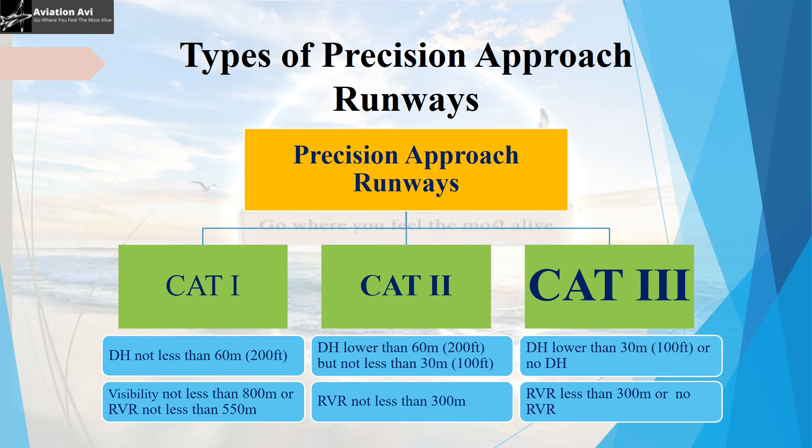In a CAT-3 precision approach runway, the decision height is lower than 30 meters or there is no decision height at all, meaning the aircraft is guided to the centerline of the runway with great precision. The RVR is lower than 300 meters or there is no RVR requirement at all. That means even when the runway is not visible at all, landings can be carried out precisely with the help of the instrument landing system.